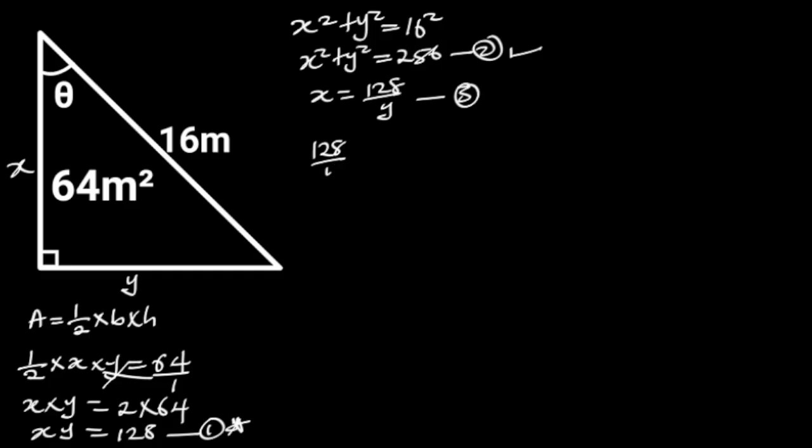128 over y squared, plus y squared, is equal to 256. Which will give us 16384 over y squared, plus y squared, is equal to 256.